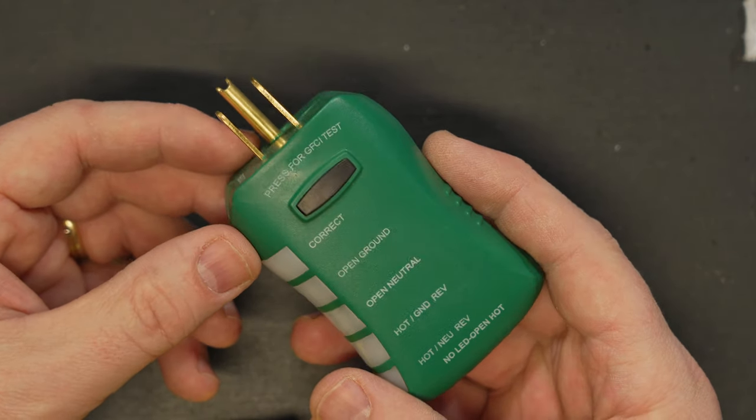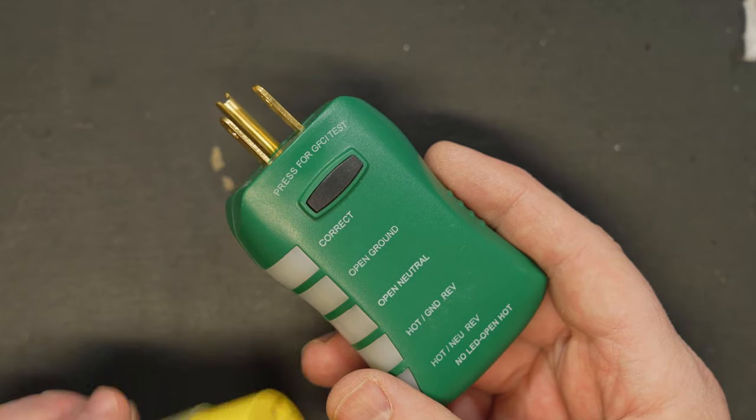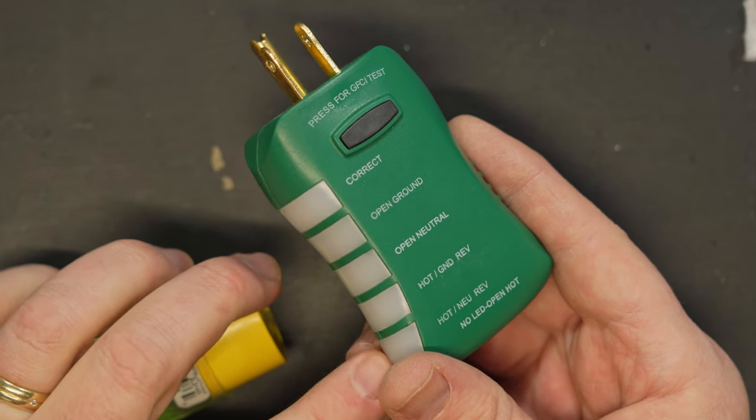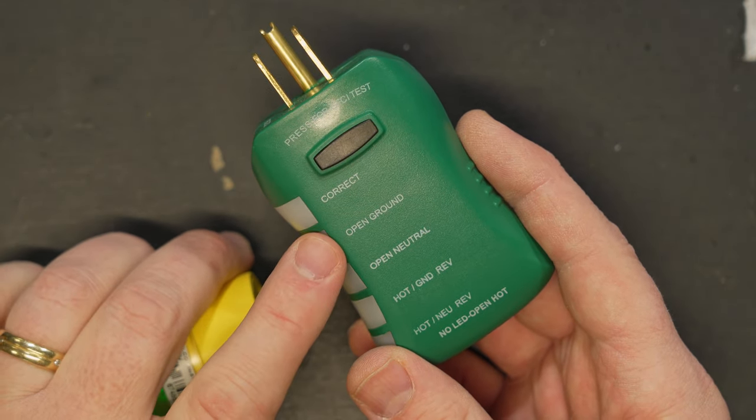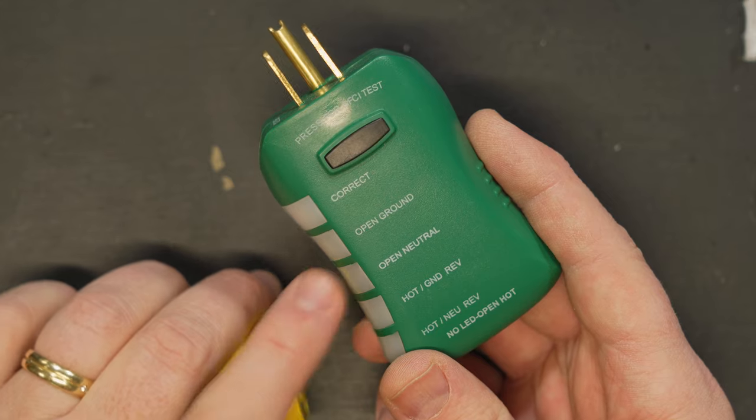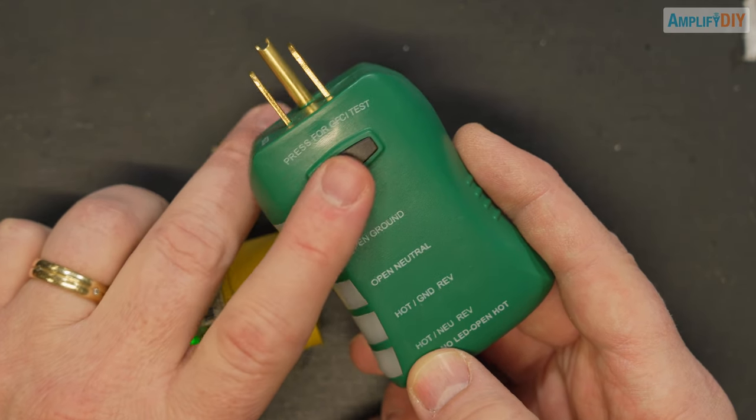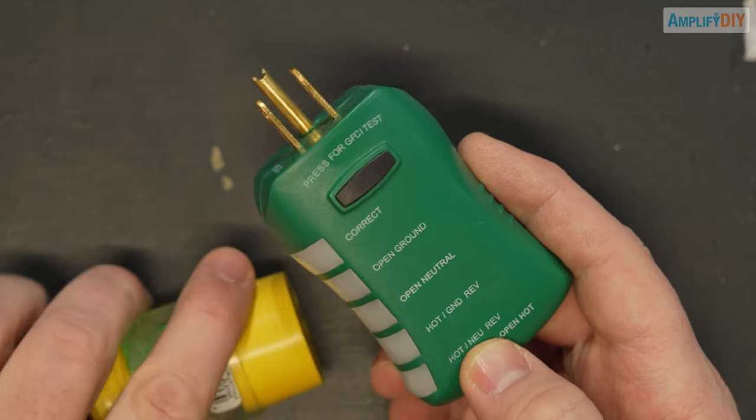These are really easy to use, you just plug this end into the outlet that you've been working on whether that's a wall outlet or an extension cord like this. And it has these lights down the side that will light up to indicate whether you have wired it correctly or if you've got another problem like an open ground, an open neutral, or you reversed some things. This particular one also lets you test for GFCI operation with this little button here but we're not going to be doing that today.